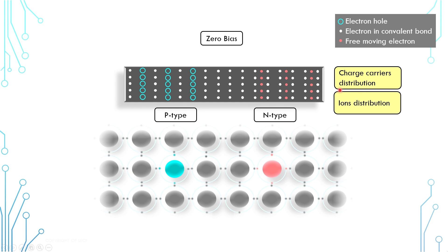Now, the second area: this middle region seems like a bunch of white electrons, but if we look into the atom level, this atom gains one extra electron and becomes a negative ion. And this atom here loses one electron and becomes a positive ion. As more electrons combine with electron holes, more ions are created in the middle, and they collectively form a depletion region. The whole block is still neutral generally, but there is a localized electric field in the middle — this area here will be more positively charged, and this area here will be more negatively charged.